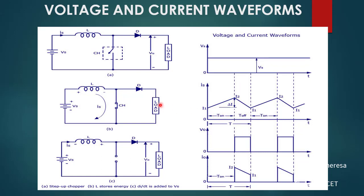At the same time, there is no output voltage and no output current. During the turn ON time, when the switch is on, the output voltage is zero and the output current is also zero. The source current — that is, the inductor current — is charging. This completes mode one. Mode two is when the switch is OFF.